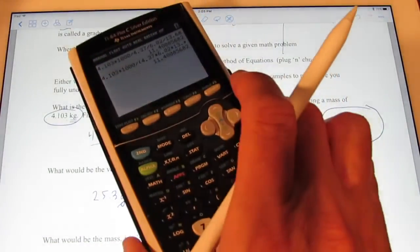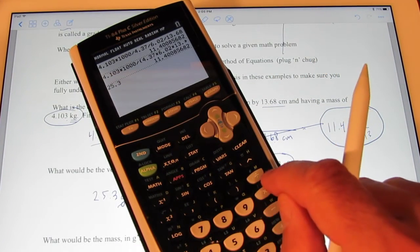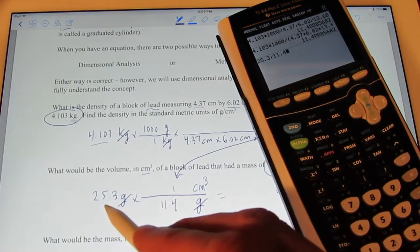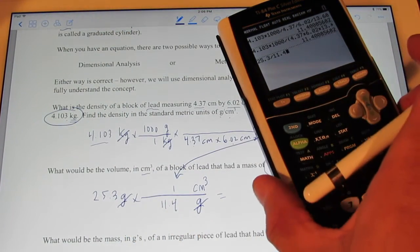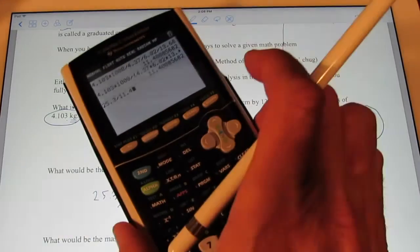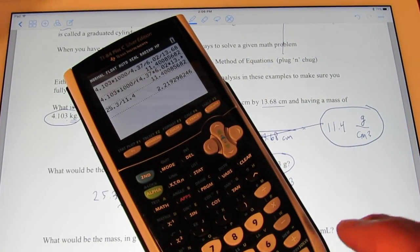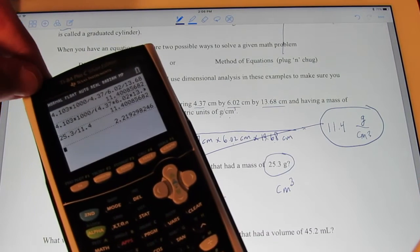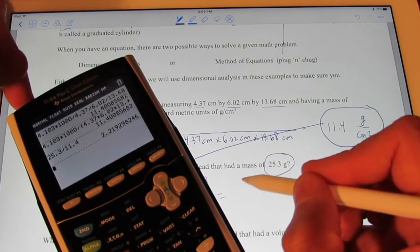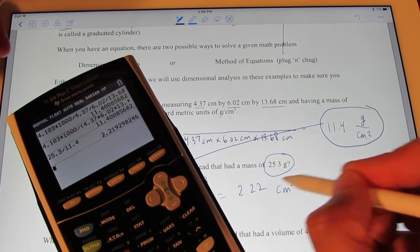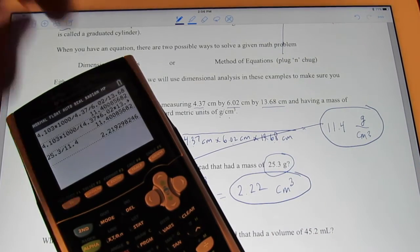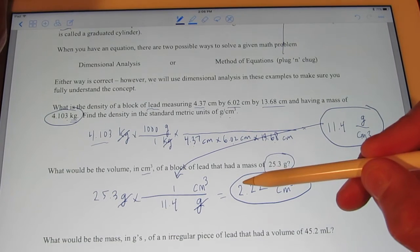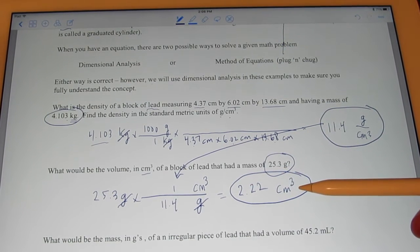So, let's see what that is. 25.3 divided by 11.4. Alright, 25.3 divided by, it's on the bottom, 11.4. So, let's see what that says. 2.219. We're allowed three significant figures. So, how about 2.22 cubic centimeters. So, that cube would have a volume of 2.22 cubic centimeters.